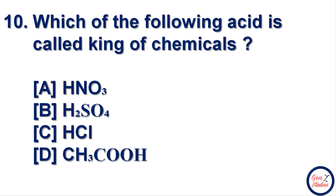Next question: which of the following acids is called the king of chemicals? Options are HNO3, H2SO4, HCl, and CH3COOH. Option B is correct — H2SO4, sulfuric acid, is known as the king of chemicals.